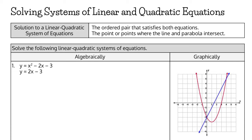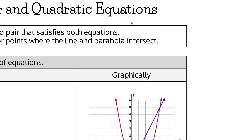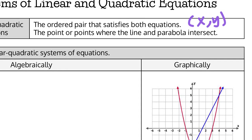Today we're going to start solving systems of equations that contain both linear and quadratic equations. Much like all of the systems we've been doing, the solution is the ordered pair that satisfies both equations. When I say ordered pair, I'm talking about a coordinate point, x comma y. That's another way of thinking of a solution: the point or points where the line and the parabola intersect. Let's jump into our first example.